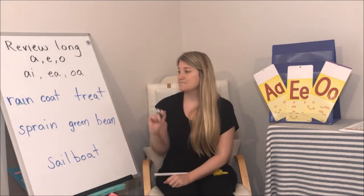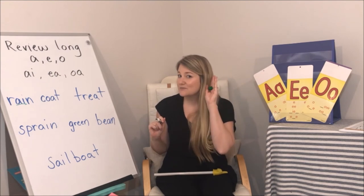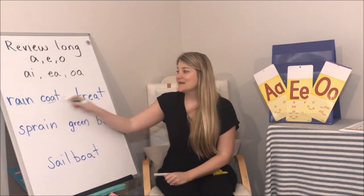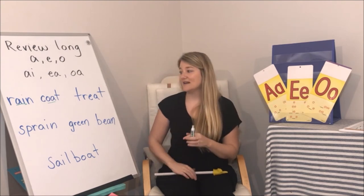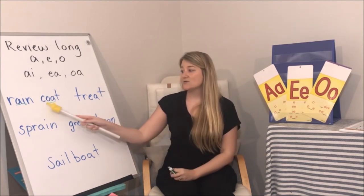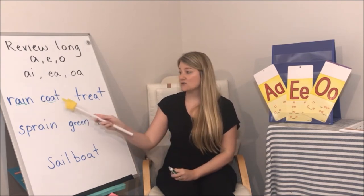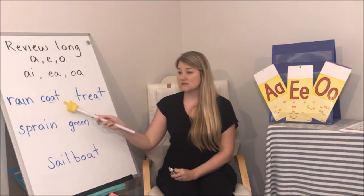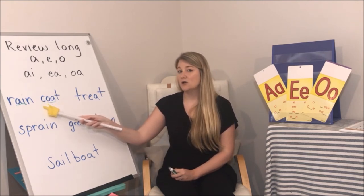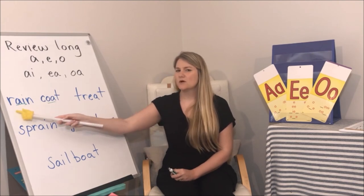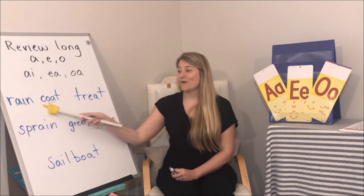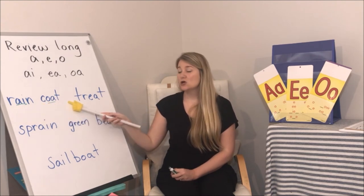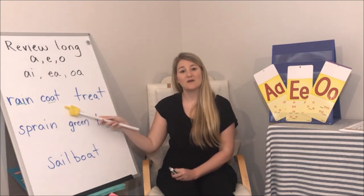Tell me the vowel spelling in the next word — shout it out. O-A. What does O-A say? O. Ready? K-O-A-T. Blend: coat. What's the word? Coat. What was the first word? Rain. Put them together — raincoat!